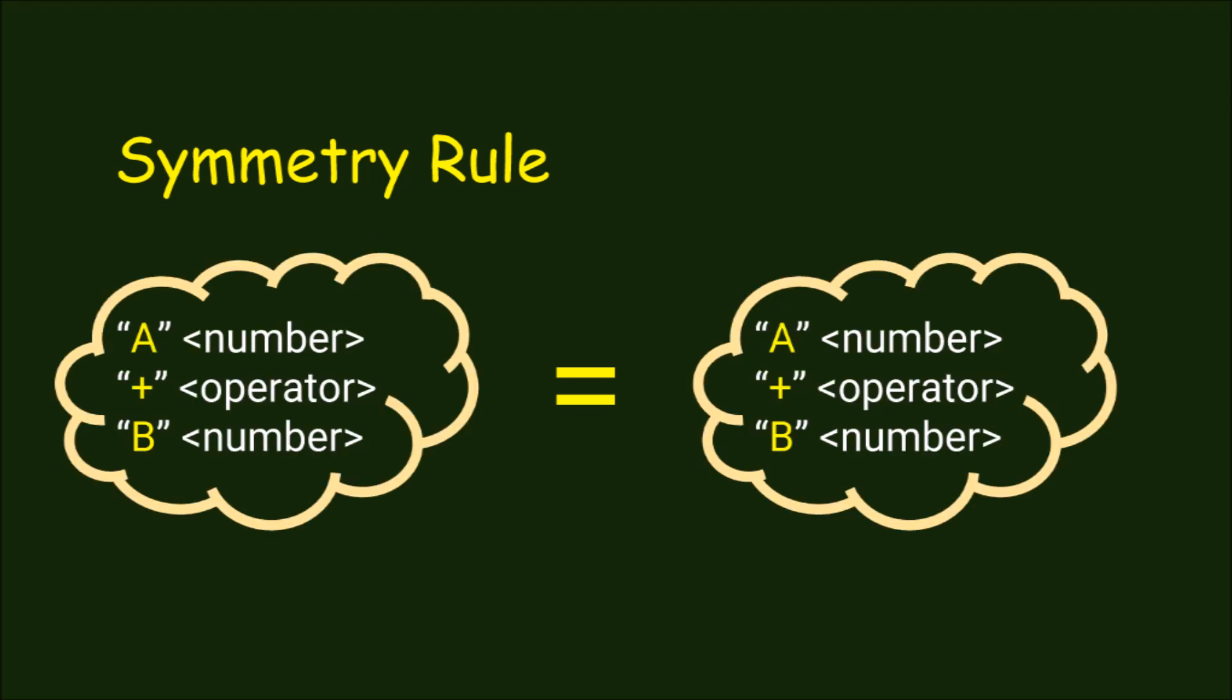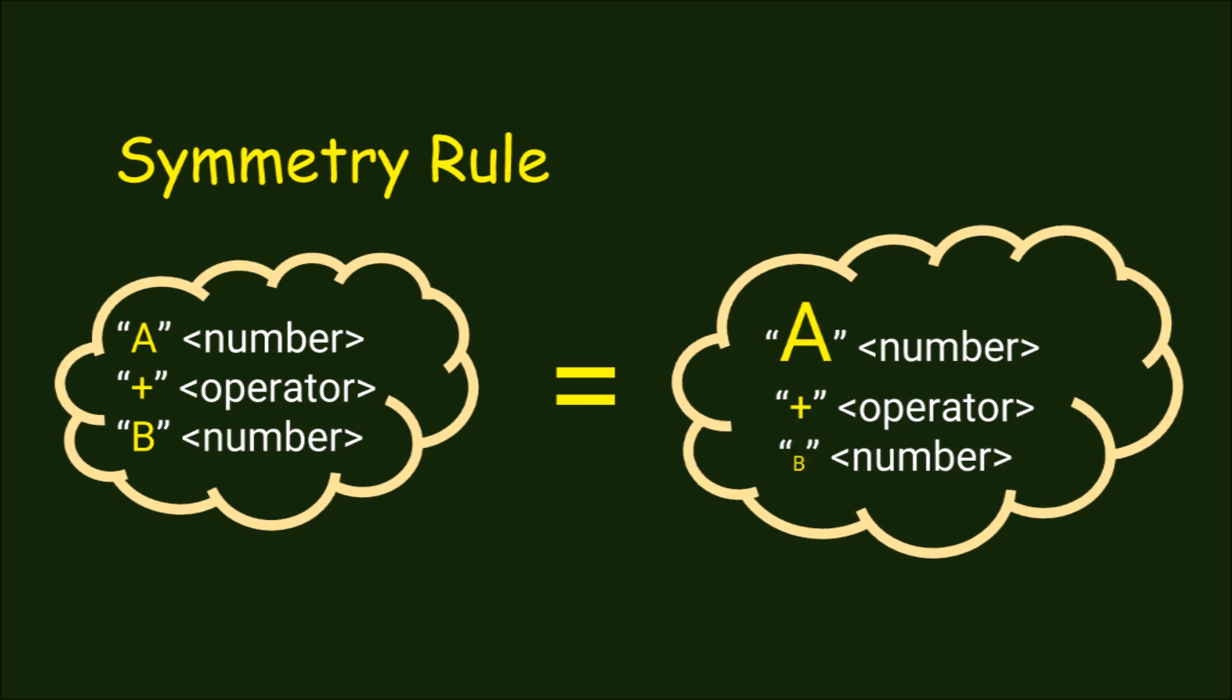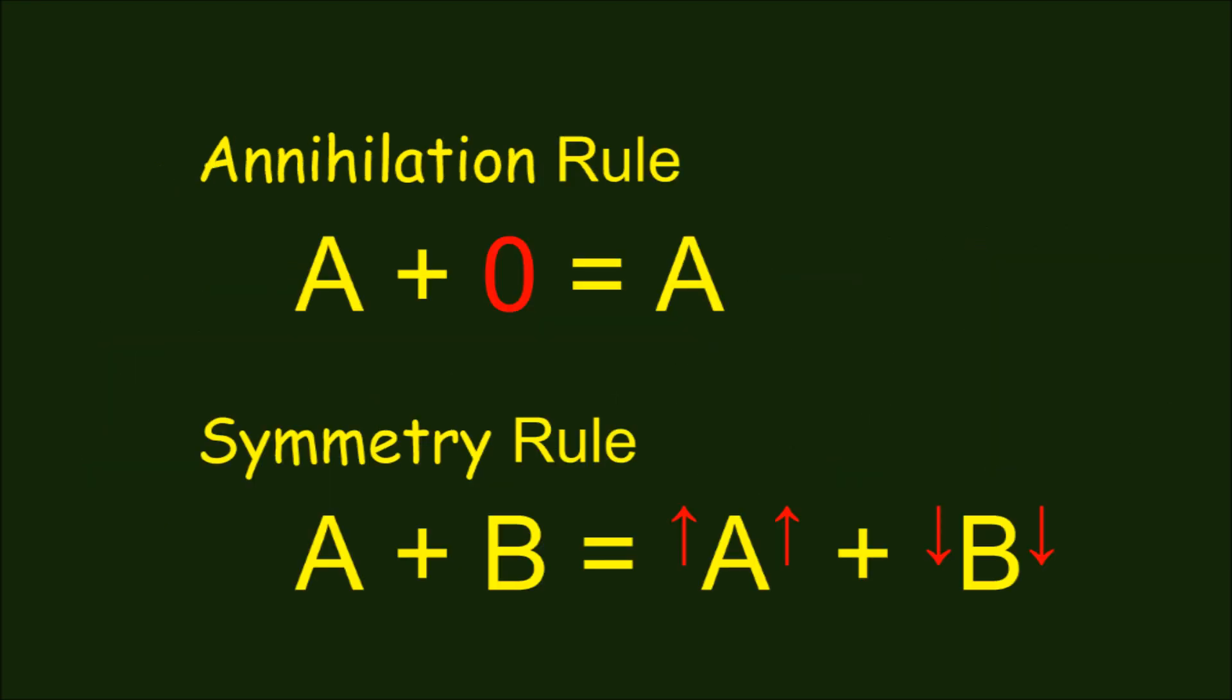The symmetry rule of addition is simple. If you start with a plus b, the value doesn't change if you make a a little bigger and b a little smaller by the same amount. In a moment I'll need to define what we mean by the numbers a and b, and what it means to make them a little bigger, and a little smaller. But first, a quick demonstration of the intuition behind this definition of addition by symmetry and annihilation.